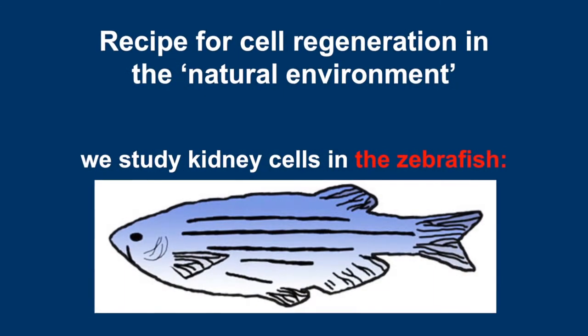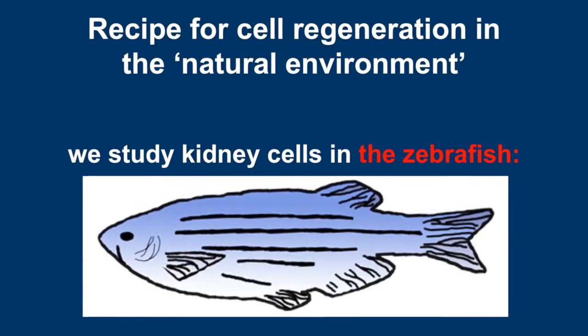Many animals can regenerate tissues — as we can regularly regenerate our blood, they can regenerate things like the kidney that we intrinsically can't do. The zebrafish is a fish very adept at replacing different cell types in its body, including its kidney. What you're seeing here is a drawing of a fish; they have kidneys with long plumbing tubes just like we do, with lots of different cell types. It's very similar in structure to our kidneys, even though we walk on land and they swim in water.